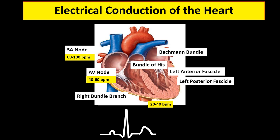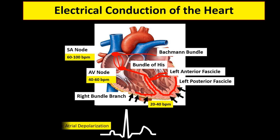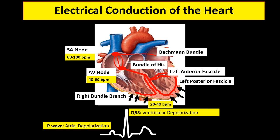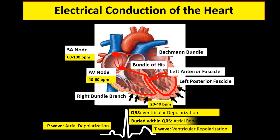To review: electrical conduction starts at the SA node, to AV node, to bundle of His, to bundle branches, then to Purkinje fibers, then reaches the ventricles. On surface ECG, P wave represents atrial depolarization, QRS complex represents ventricular depolarization, and T wave represents ventricular repolarization. Atrial repolarization normally cannot be seen because it is buried within the QRS complex.